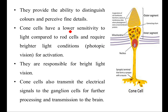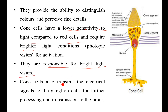Cone cells have lower sensitivity to dim light compared to rod cells. Rod cells are sensitive to dim light, whereas cone cells are sensitive to bright light and require bright light conditions. Cone cells are responsible for bright light vision, while rod cells are responsible for dim light vision. Cone cells also transmit electrical signals to the ganglion cells for further processing and transmission to the brain.